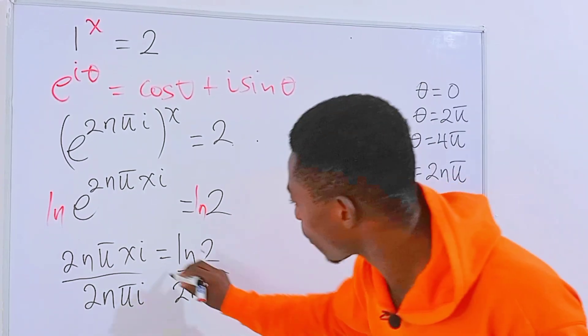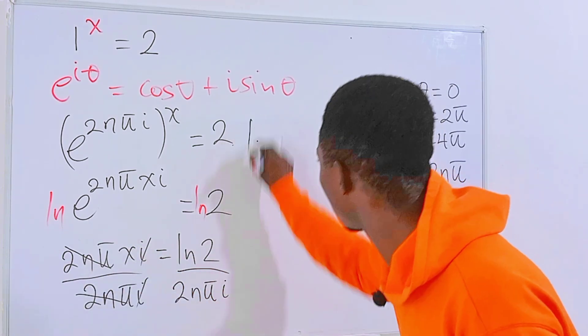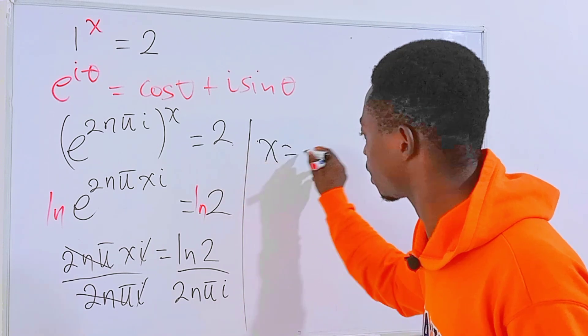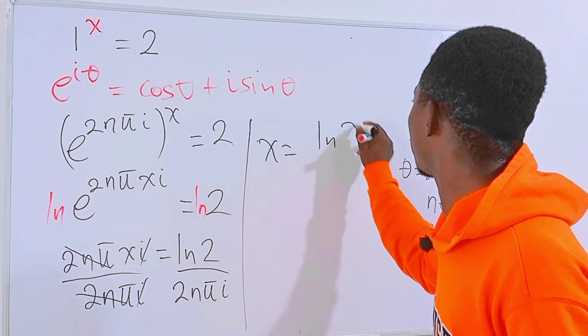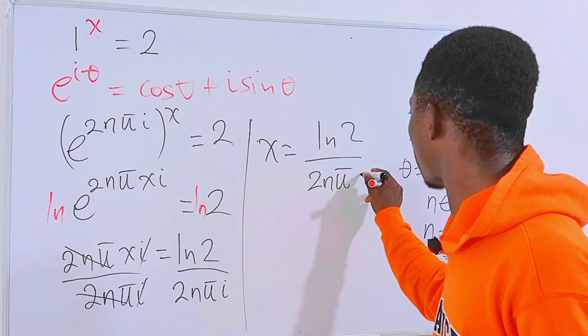Alright, so straight away we can see that this i will cancel this, then the whole of this will cancel that. And we are left with x equals ln of 2 divided by 2nπi.